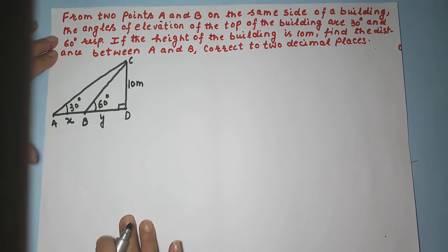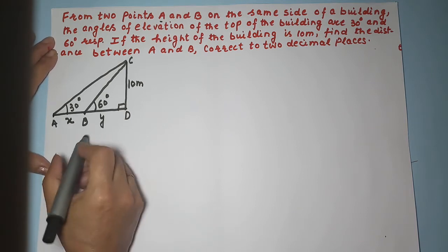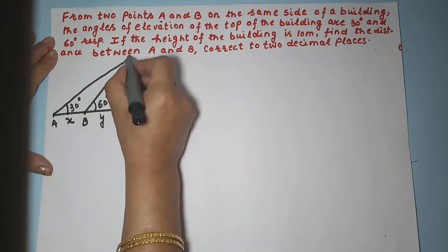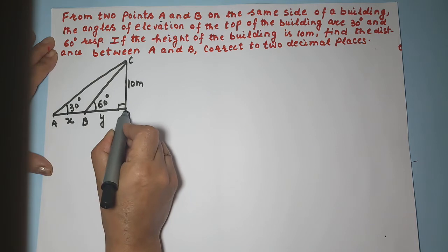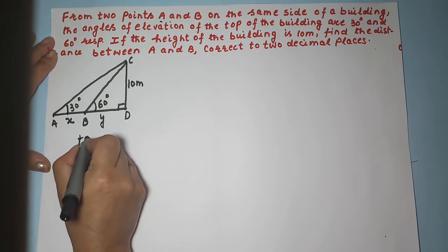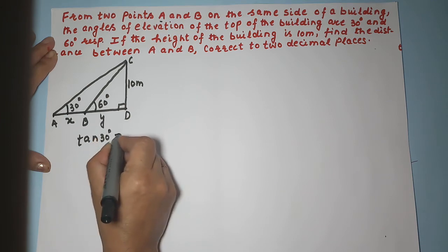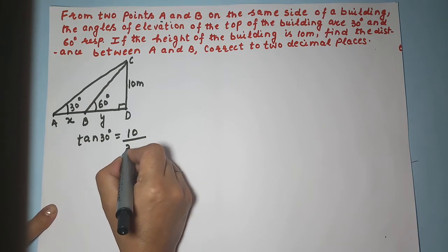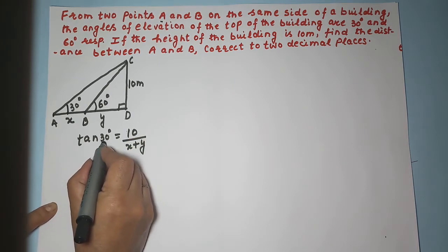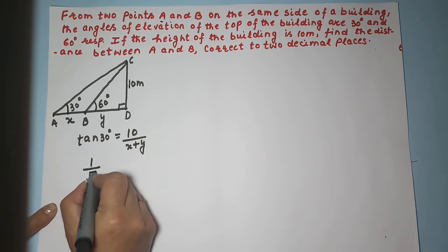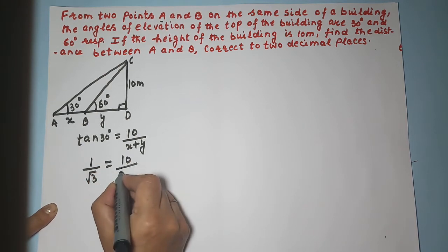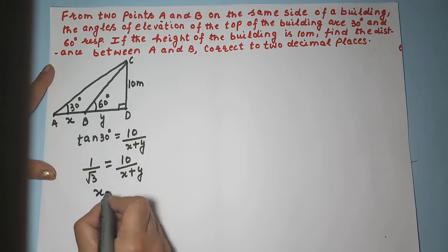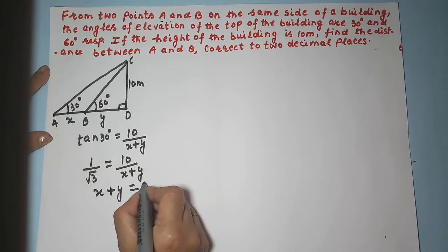Using the data, I will take the triangle with the 30 degree angle first. The opposite side is the height and the adjacent is the entire base. So I can write tan 30 equals 10 upon X plus Y. I know tan 30 is 1 by root 3, so 1 by root 3 equals 10 upon X plus Y. Cross multiplying, X plus Y equals 10 root 3. This is my equation one.